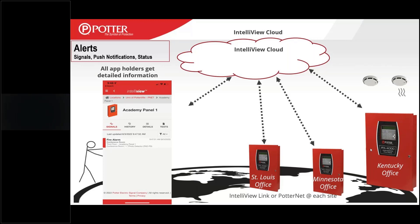There is really no control in IntelliView. The only time you can control a panel in IntelliView is if you put the panel into a walk test mode. You don't have to put a panel in walk test mode to use our test feature, but you do need to if you want any control of the panel. All of these things are based on our UL restrictions — if you put the panel in walk test mode, you're more in a commissioning or maintenance mode and not a monitoring mode.